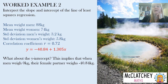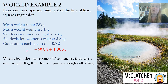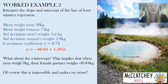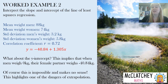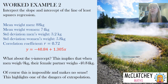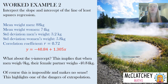Now for the y-intercept: when men weigh zero kilos, the female partner would have a negative weight of 40.84 kilos — which is of course impossible. Men can't weigh zero kilos and women can't have a negative weight. This illustrates one of the dangers of extrapolation: the men in this study weighed between 70 and 90 kilos, so extrapolating to zero kilos is well beyond the usefulness of the model. This is something you need to remember when interpreting a y-intercept that falls well outside the boundaries of your model.